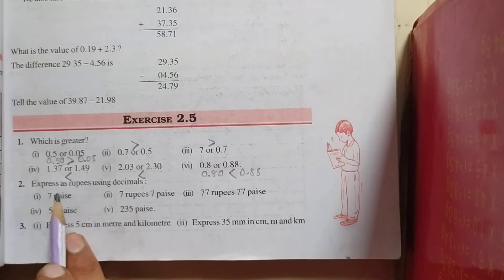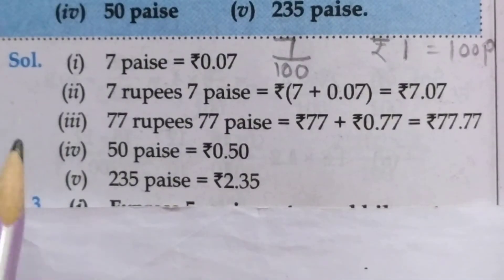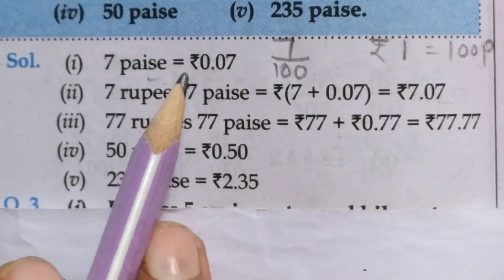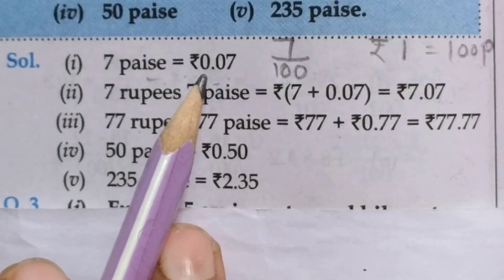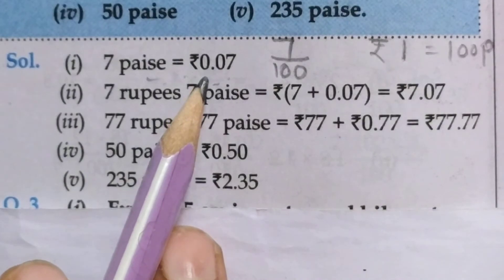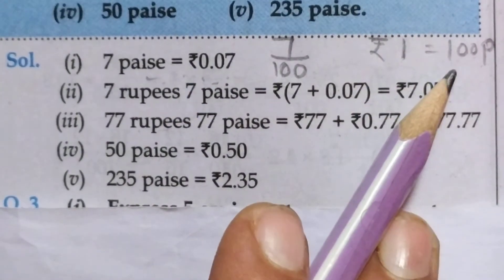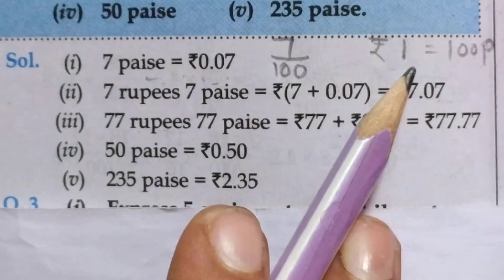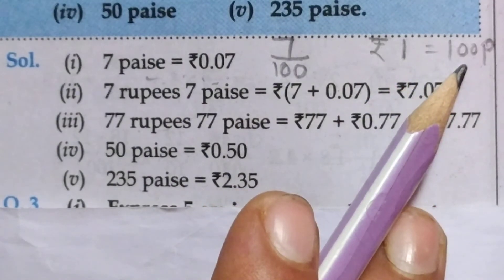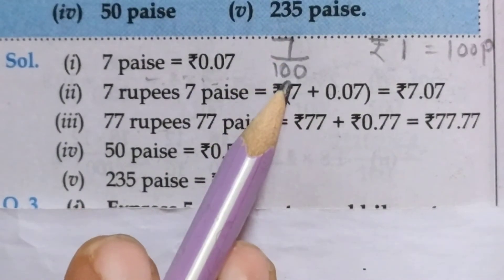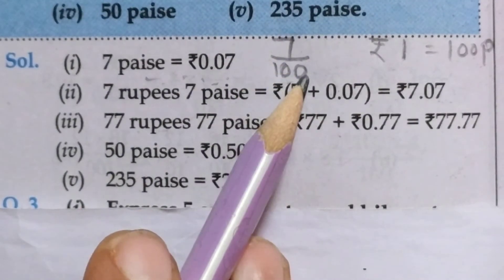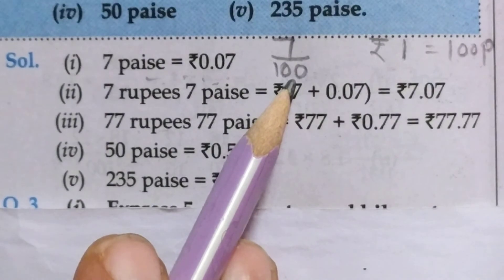Now, second question. Express as rupees using decimals. Let us solve this. So, first, 7 paise is equal to 0.07 rupees. And how is it possible? So recall the rule. Rupees 1 is equal to 100 paise. Then, 7 paise is equal to how many rupees? So students, take 7 upon 100. Now convert them into decimal. So, 2 decimal places are there.